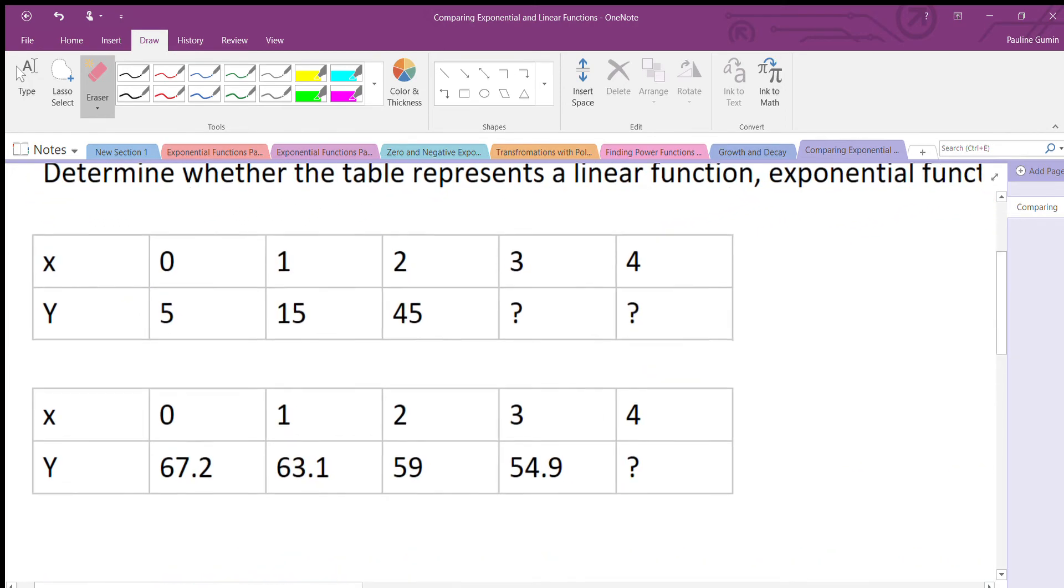The first thing I like to test is whether or not it's a linear function. I think that's the easiest thing to test because what we're looking for is a rate of change, which is the change in y's over the change in x's. If it's constant throughout the whole table, that means it's a linear function. So let's give that a shot. From 5 to 15, we go plus 10, 0 to 1, plus 1. So 10 over 1.